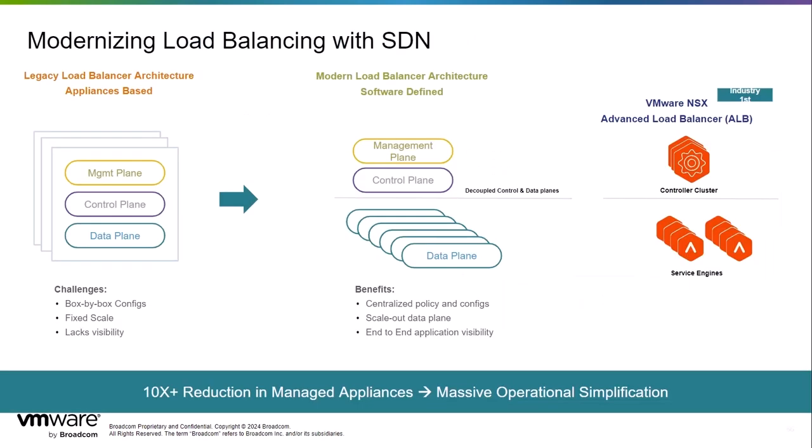You can modernize your load balancing infrastructure with Avi. The legacy load balancer architecture has the challenges of box-by-box configurations, fixed scale, and lacks visibility. Modern load balancer architecture decouples the control and data planes and provides the benefits of centralized policy and configurations, scale-out of the data plane, and end-to-end application visibility. Avi does this with two main components: the controller, which is the management and control plane, and service engines, which is the data plane.